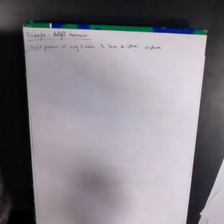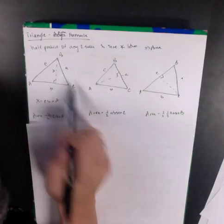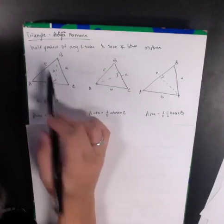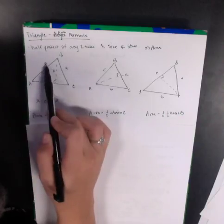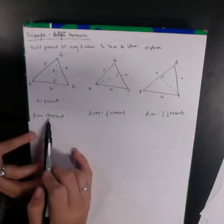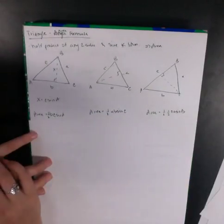Let's talk about the triangle area formula. The new formula is one half times the product of any two sides times the sine of the angle between them — that gives us the area. If I have triangle ABC with sides a, b, c, and I draw height x, I know sine of angle A equals opposite over hypotenuse, so x equals c sine of A. My area is one half b times c times sine of the angle A in between.